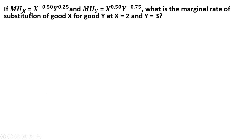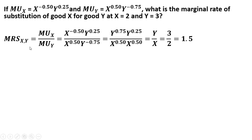Here we have more complicated equations for the marginal utility of good x and good y — they're no longer constant. What is the marginal rate of substitution of good x for good y at x equals 2 and y equals 3? We form the MRS as the marginal utility of x divided by the marginal utility of y, substitute the equations, and simplify using rules of exponents. The x to the minus 0.5 moves to the denominator as x to the 0.5, and y to the minus 0.75 moves to the numerator as y to the 0.75, giving us y over x. Plugging in y equals 3 and x equals 2 gives an MRS of 1.5.